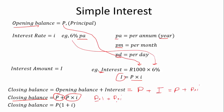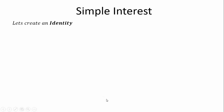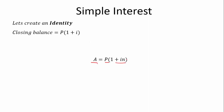We take out P as a common factor, giving us P multiplied by (1 + i). So let's create the identity. Our closing balance is P(1 + i). We're going to say A equals P(1 + i)N — the only difference is we've added N and we're now calling our closing balance A.